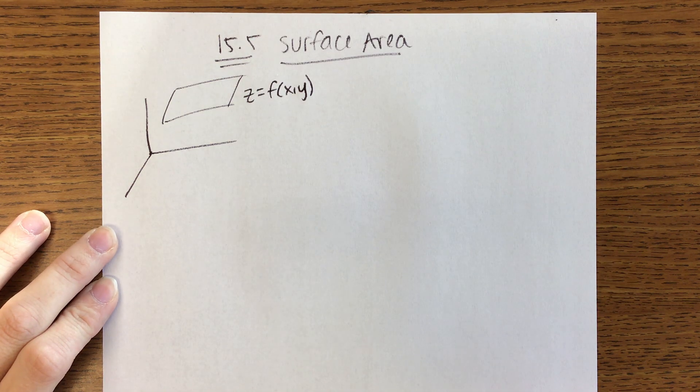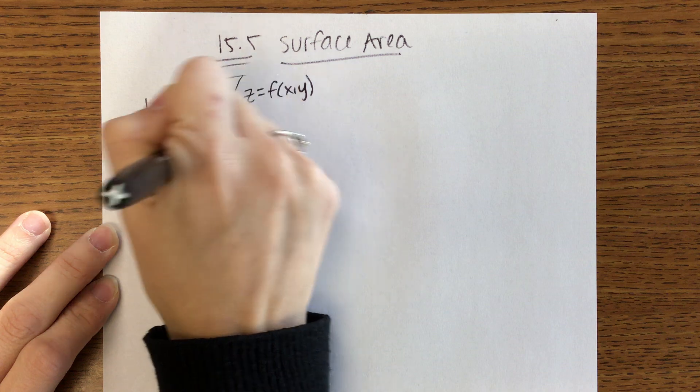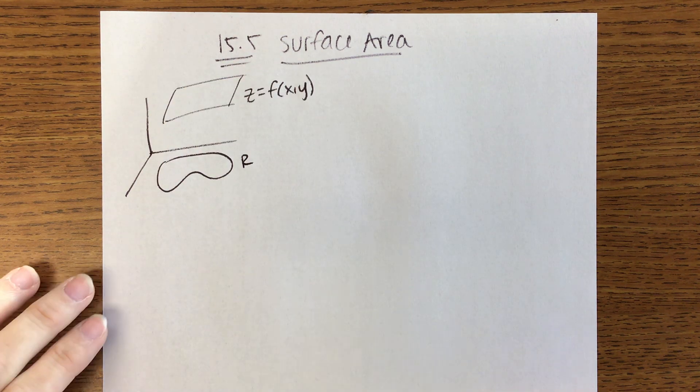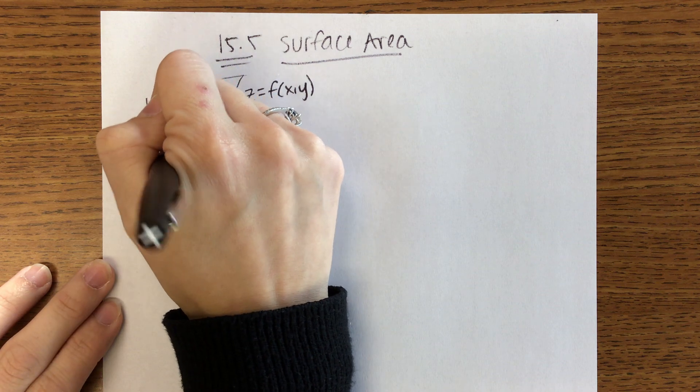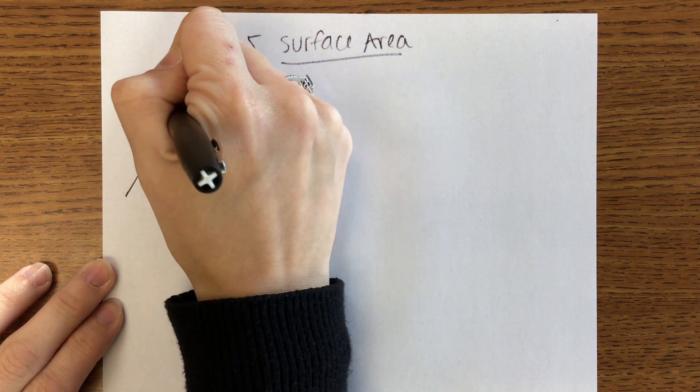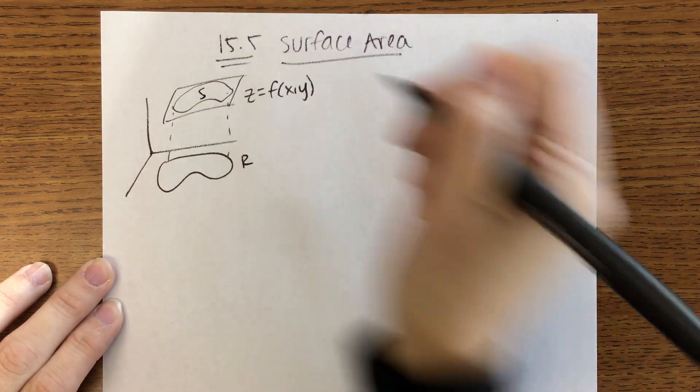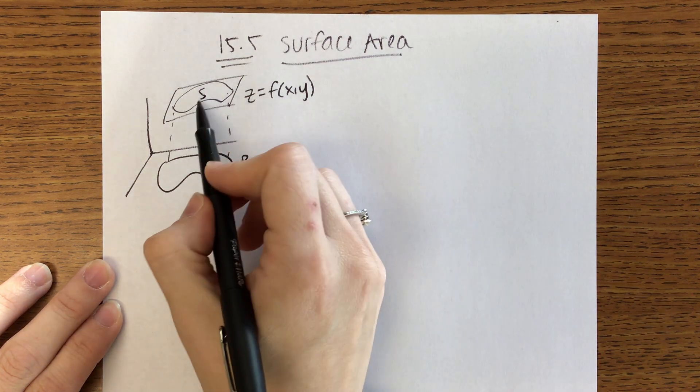As before, we're going to have some region R in the XY plane. What we're going to be doing is we're going to be mapping that R up onto your surface. So then we'll call this S, and we'll be looking for the area of S. That's the idea.